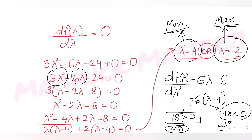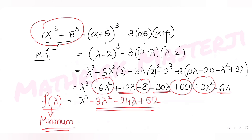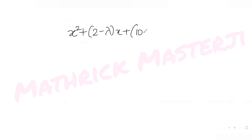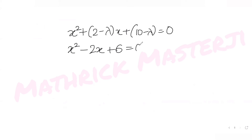Now substituting λ = 4 into the original quadratic equation x² + (2 - λ)x + (10 - λ) = 0: we get x² + (2 - 4)x + (10 - 4) = 0, which simplifies to x² - 2x + 6 = 0.